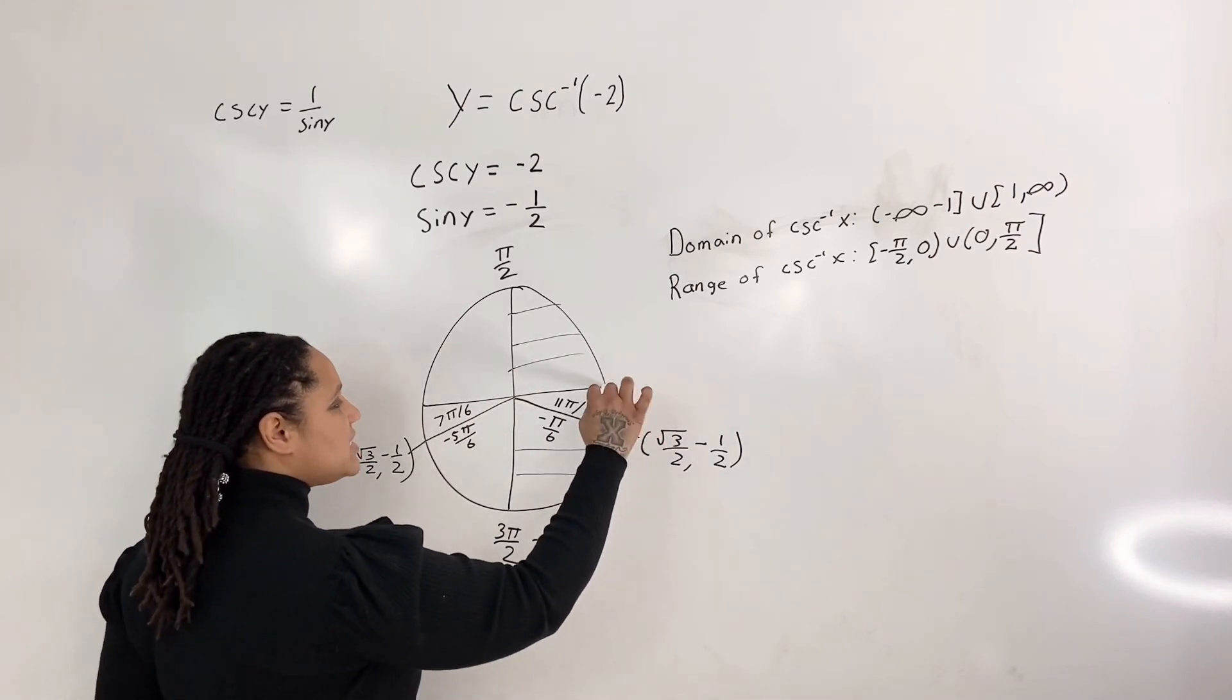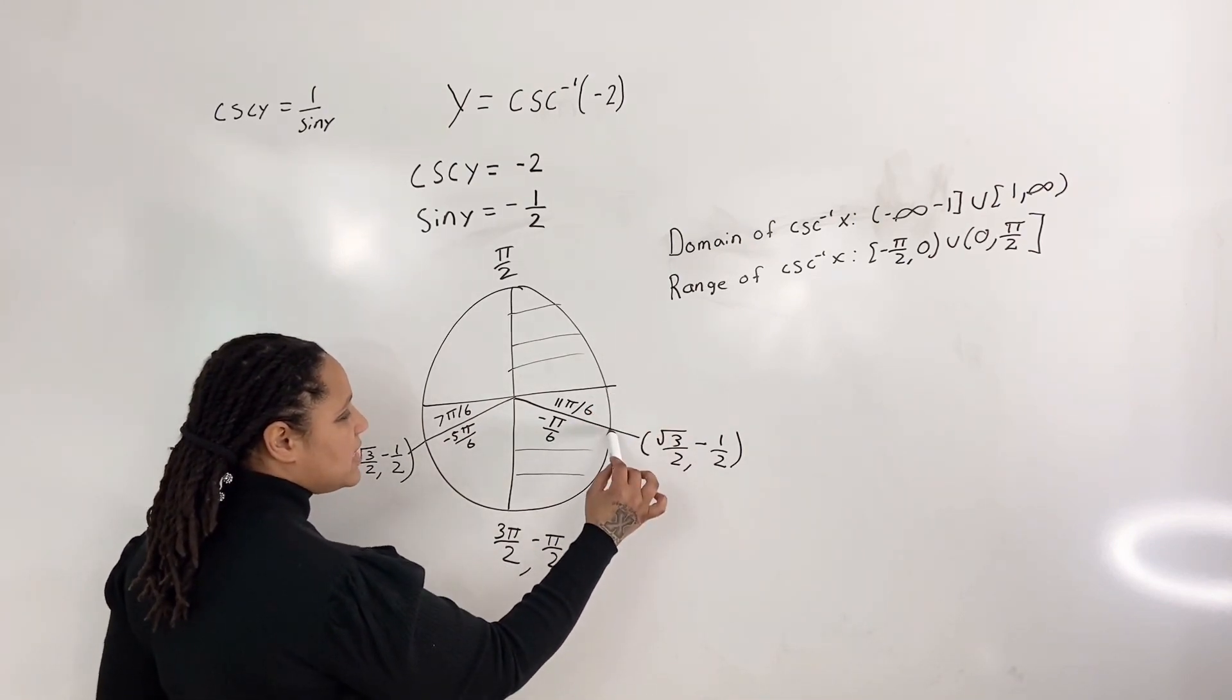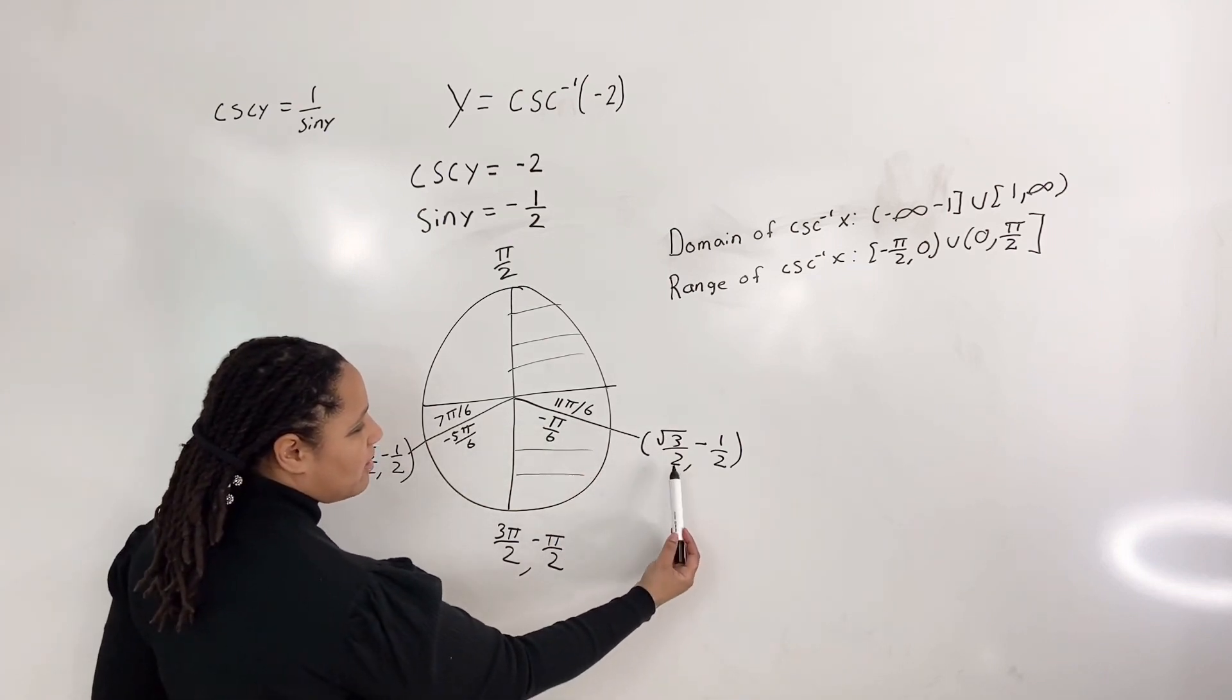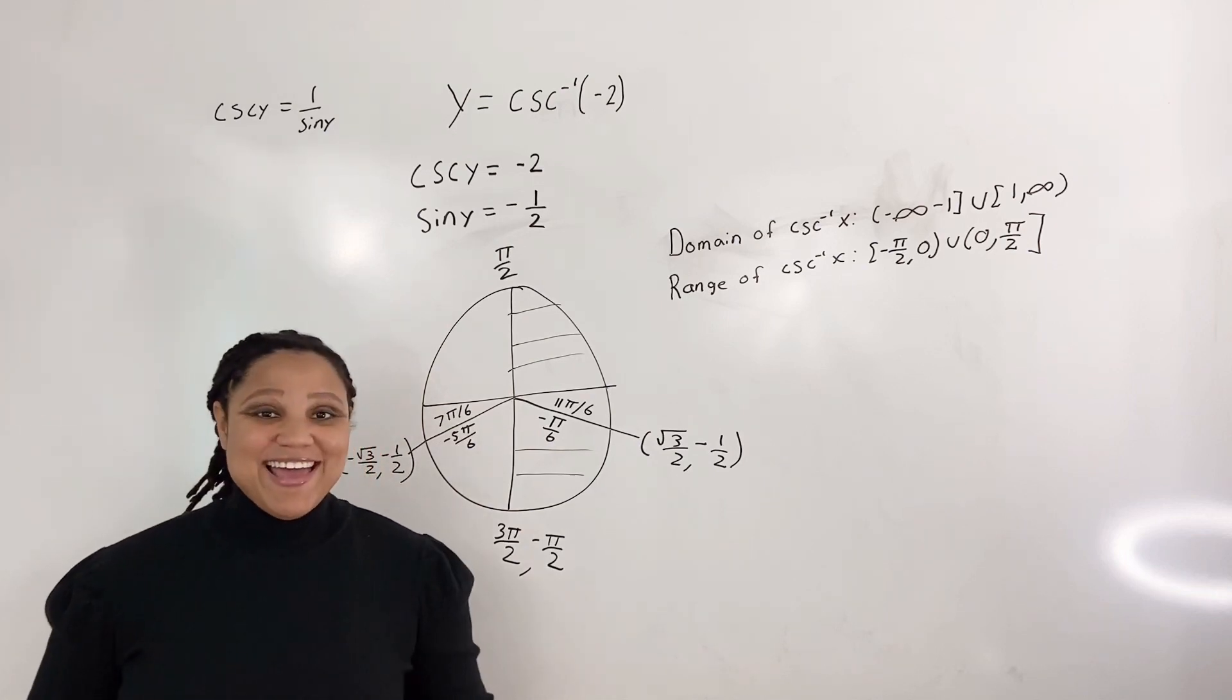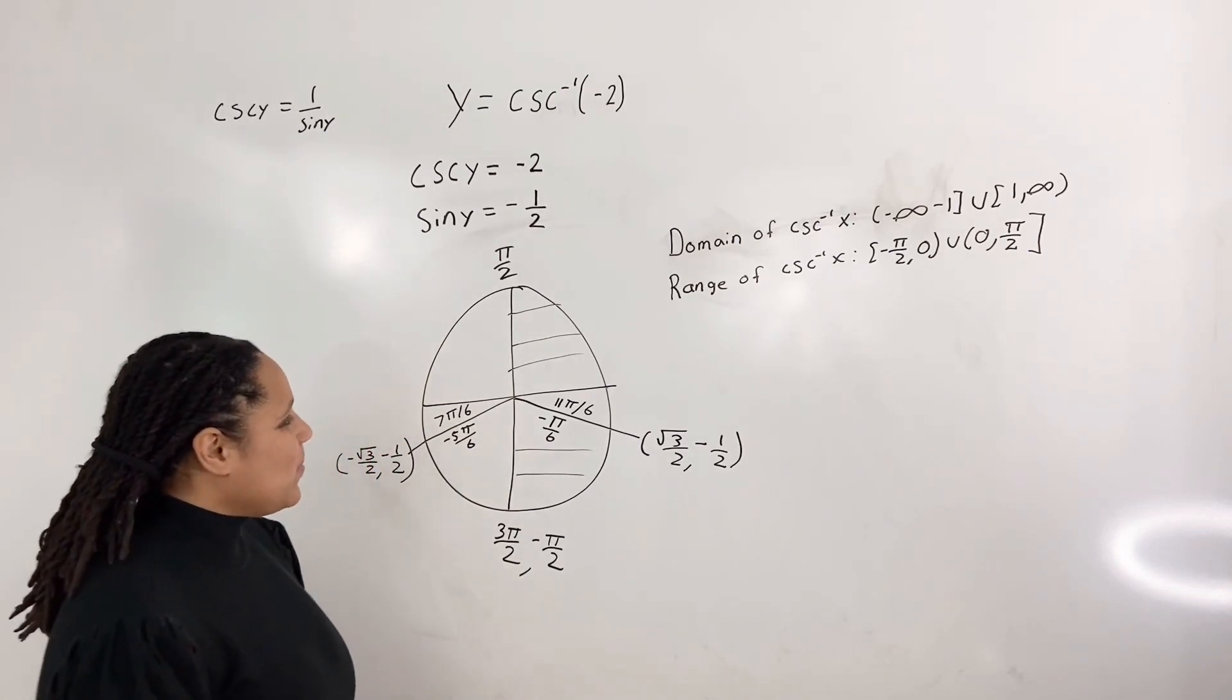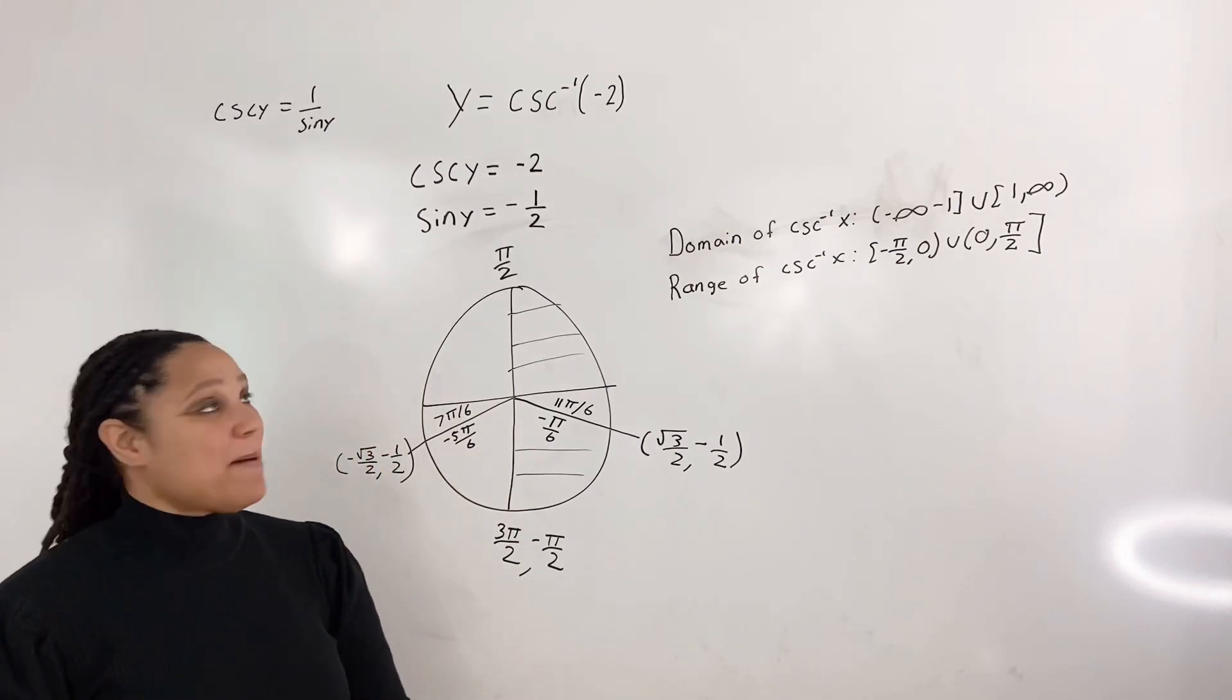So negative pi over 6 starts here and comes out where the terminal points are positive root 3 over 2 and negative 1 half. Okay, so we are going to choose negative pi over 6.